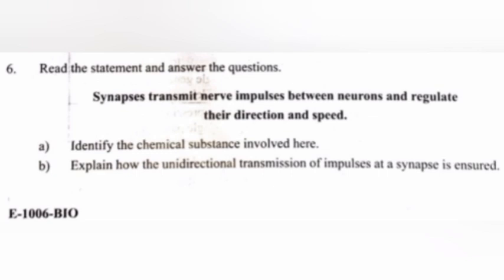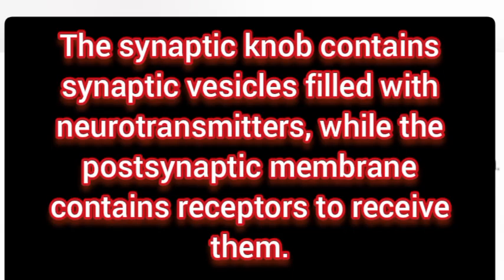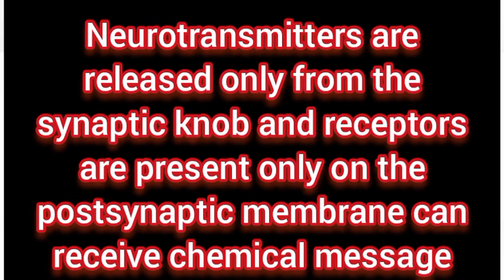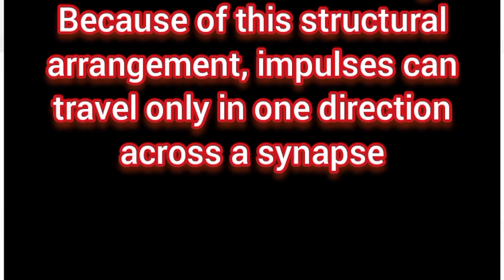Part b: Explain how the unidirectional transmission of impulses at a synapse is ensured. Answer: The synaptic knob contains synaptic vesicles filled with neurotransmitters, while the postsynaptic membrane contains receptors to receive them. Neurotransmitters are released only from the synaptic knob, and receptors are present only on the postsynaptic membrane. Because of this structural arrangement, impulses can travel only in one direction across a synapse.